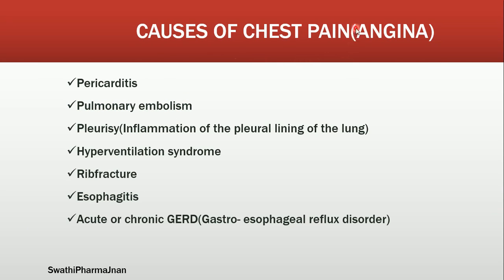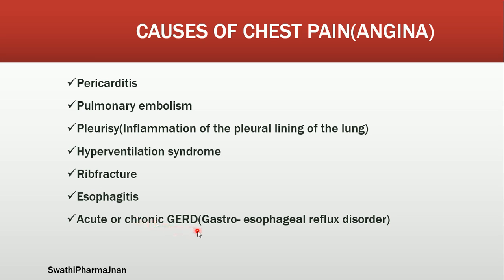What are the various causes of chest pain, also called angina pectoris? The causes are pericarditis — inflammation or infection of the pericardium — which will lead to inflammation and is one of the causes of chest pain. Next is pulmonary embolism. Pleurisy is inflammation of the pleural lining of the lungs; if the pleural lining gets inflamed, it will also lead to angina pectoris. Hyperventilation syndrome and rib fracture can also cause angina. Esophagitis — inflammation of the esophagus — and acute or chronic gastroesophageal reflux disorder are also causes of angina pectoris.